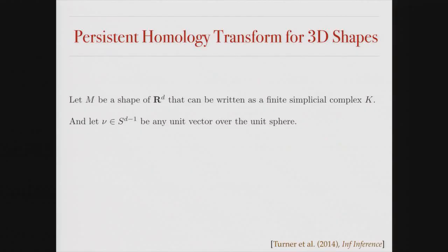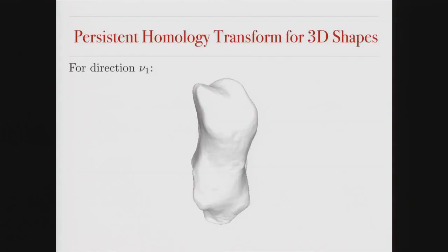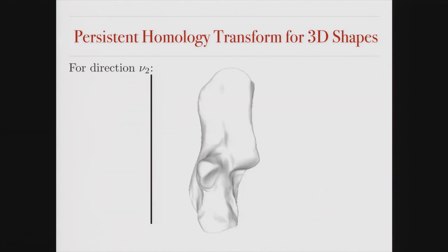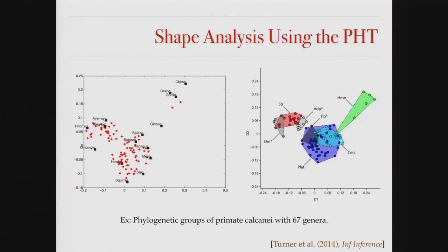The transform works like this: you start with a shape, start with a filtration over a certain region, sweep over that shape, collect the persistence diagram, save it, then rotate the shape and do it again. You do this over all positions over the unit sphere, so you have a collection of diagrams that tell you about what the 3D view of that object actually is. You can then study three-dimensional objects via the collection of persistence diagrams. These are a bunch of bones — heel bones from primates. We have 67 different genera. I take the collection of persistence diagrams over all these different sweeps, save them, and start doing things like clustering based on how their diagram ranges change from group to group.